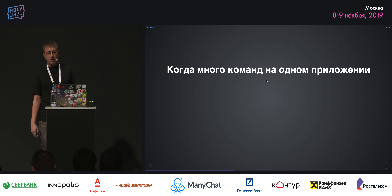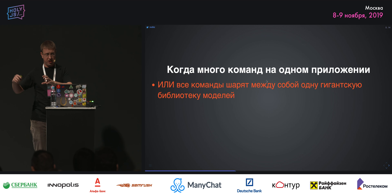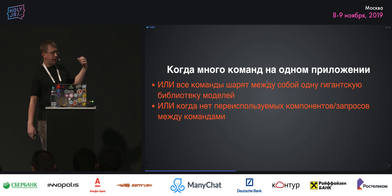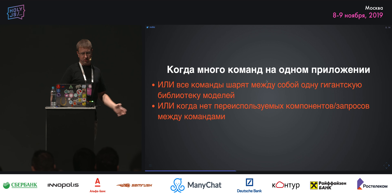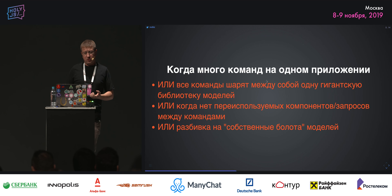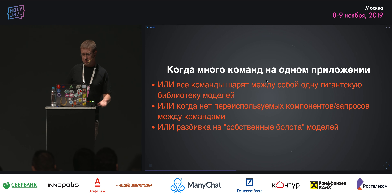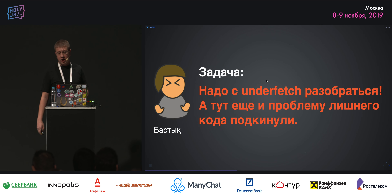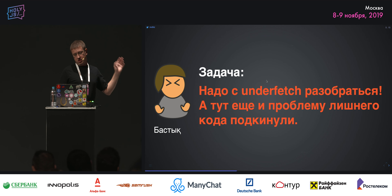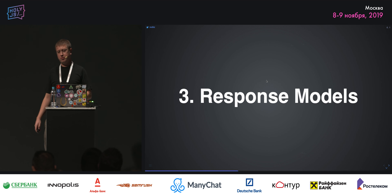Снова проблема с опечатками при алиасах. Когда много команд работают в одном приложении — все будут шарить одну гигантскую систему моделей либо дробить её, изолируясь в своих командах без переиспользования. Появляется задача разобраться с underfetch и с лишним кодом. Поэтому появились response models.